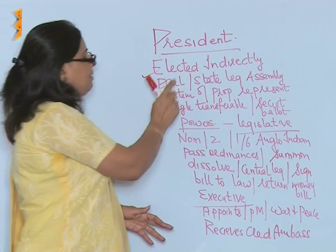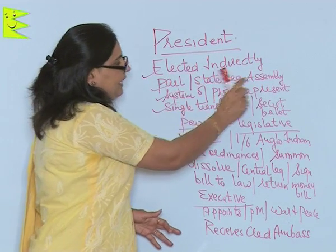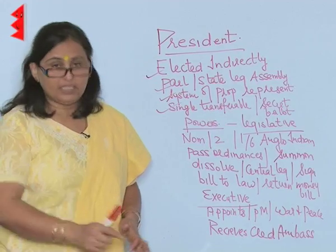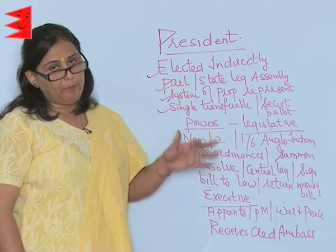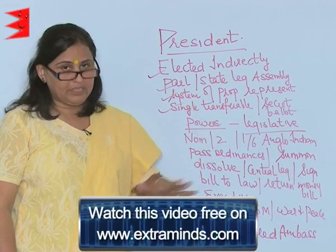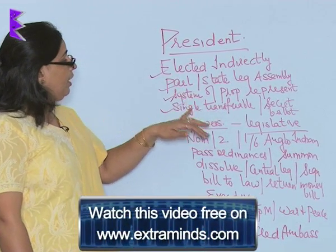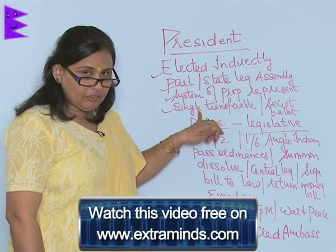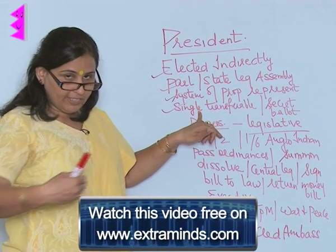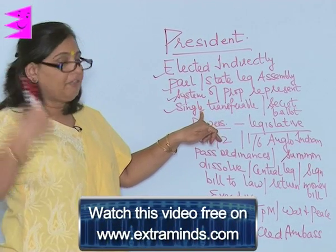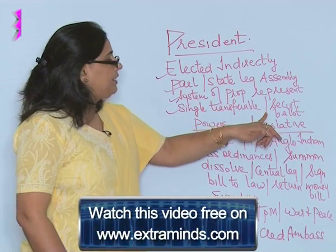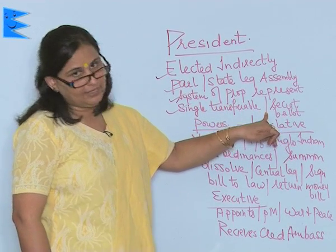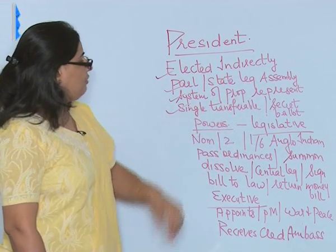So just remember: the President is indirectly elected by the elected members of the Parliament and the state legislative assembly. The system is called proportional representation, the vote is single transferable — meaning it is transferred from one to another — and it is conducted in a secret ballot system.